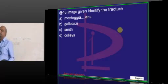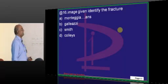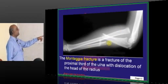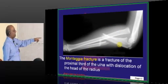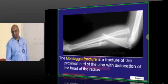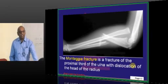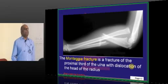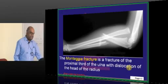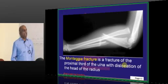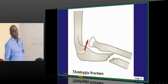A fracture was given - Monteggia or Galeazzi. How will you recognize? Monteggia is a fracture of the proximal third of the ulna with dislocation of the head of the radius. Galeazzi - the fracture is in the lower end. Upper end is Monteggia, lower end is Galeazzi. That is what needs to be remembered.